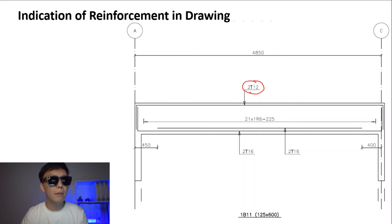2T12. That label here gives the meaning that there is two numbers of high tensile steel bar at 12mm diameter. Same goes to the label at the bottom here. This is the line for the reinforcement bar labeled 2T16. It indicates that it is designed with two numbers of high tensile steel bar at 16mm diameter.